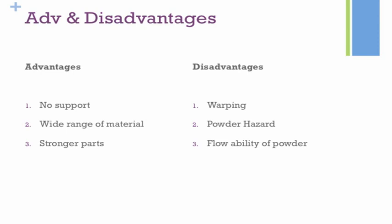Moving on to the disadvantages. For SLS, since there's no support available, you have a chance of warping. If you want to print a large horizontal surface plane, the plane could warp because there's really no support — the print will continue but it might warp. Another disadvantage is that SLS is a powder-based powder bed fusion technology, so powder hazard is a very big concern, especially during recycling of the powder. It could fly around your work area and may be hazardous to your health. Not many studies have been done on how such powder affects humans, so it's important to take precaution.